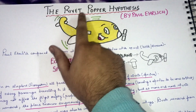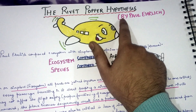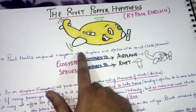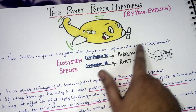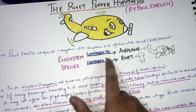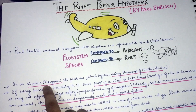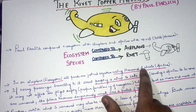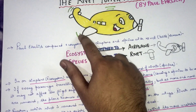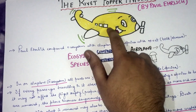Now let us look at the Rivet Popper Hypothesis, given by Paul Ehrlich. Paul Ehrlich compared the ecosystem to an airplane and species to rivets — bolts or screws. In an airplane, all parts are joined together using thousands of rivets.